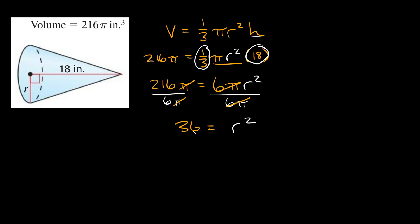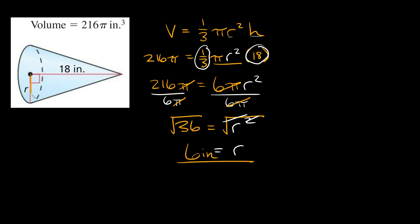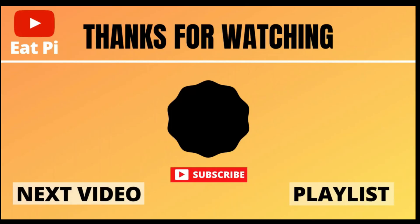To get rid of the square exponent, take the square root of both sides. That gives r equals the square root of 36, which equals 6. Don't forget your units — they're inches — so the radius equals 6 inches. If you found the video helpful, leave a thumbs up below, and if you have any questions, let me know in the comment section.